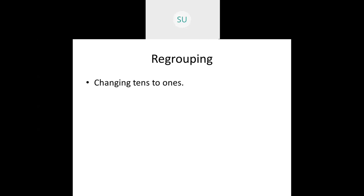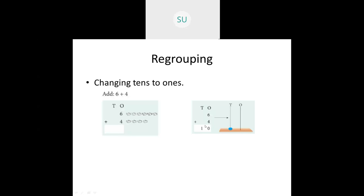Then we saw regrouping. What was regrouping? Changing tens to ones. So when I add 6 plus 4 I get 10 — that is, I have 10 ones. But I can't write 10 in the ones place, so we regroup that 10 ones as 1 ten and 0 ones and write the answer as 10. Another example: add 7 and 8. Both are in ones place, and when you add you get 15 ones. Since 15 is a two-digit number I can't write it in ones place, so we regroup 15 ones as 1 ten and 5 ones and get the answer 15.